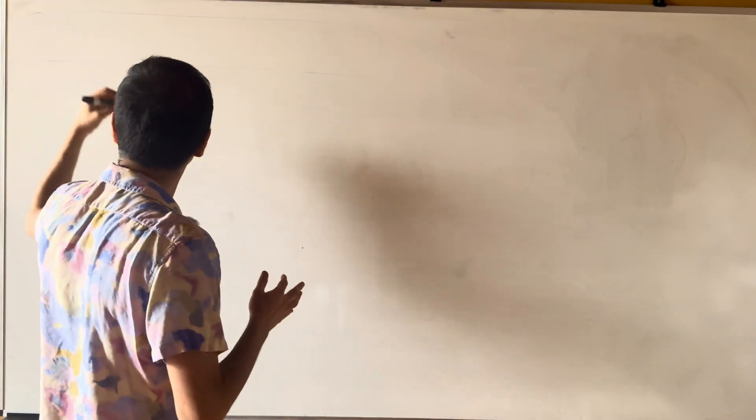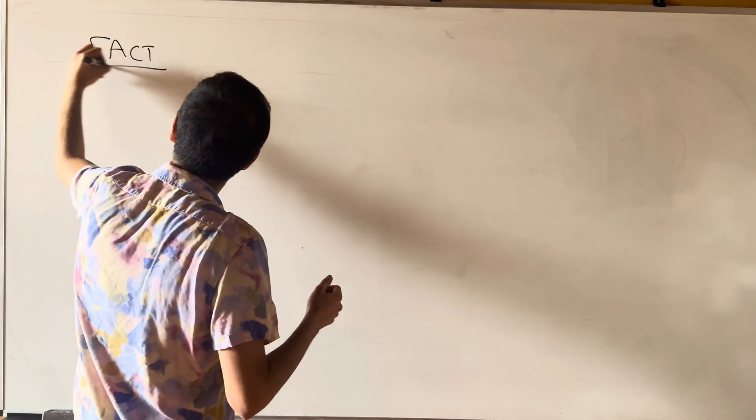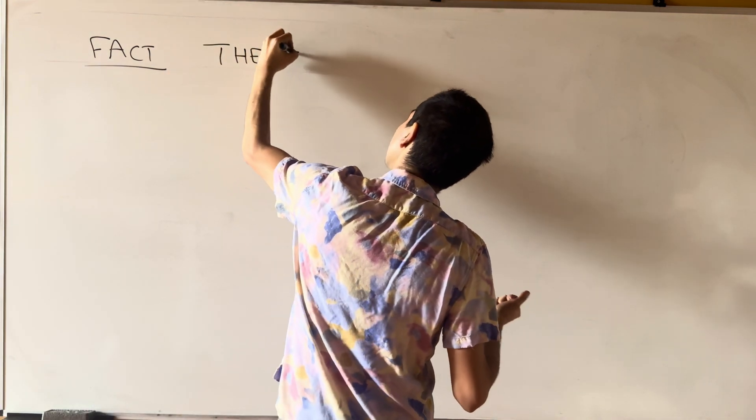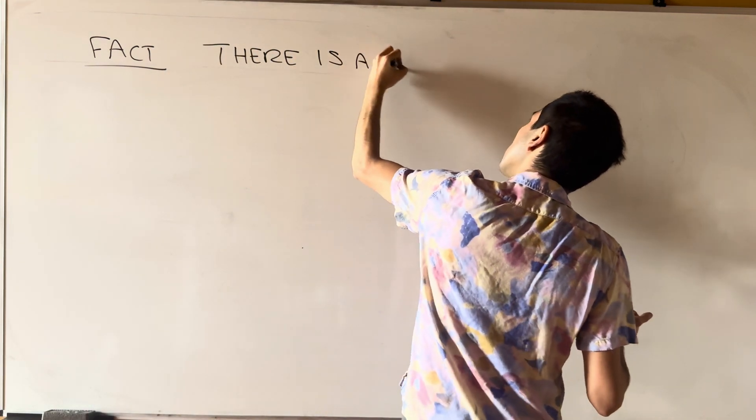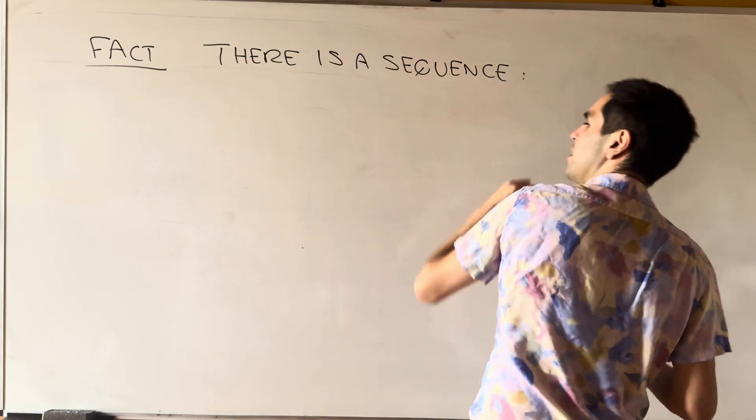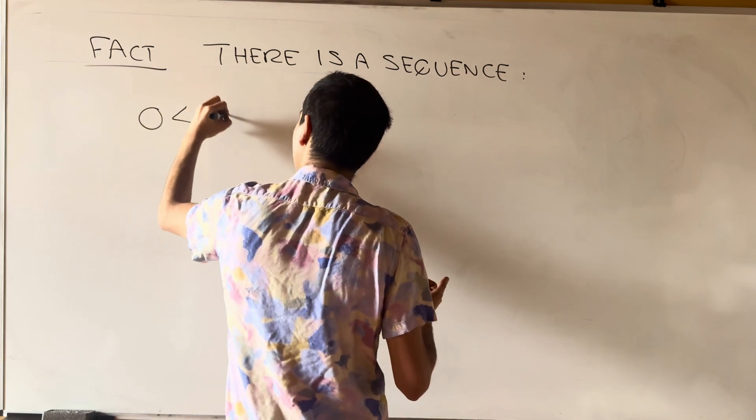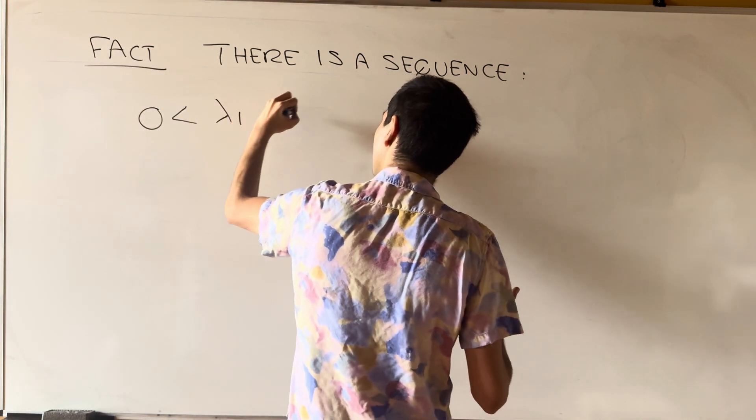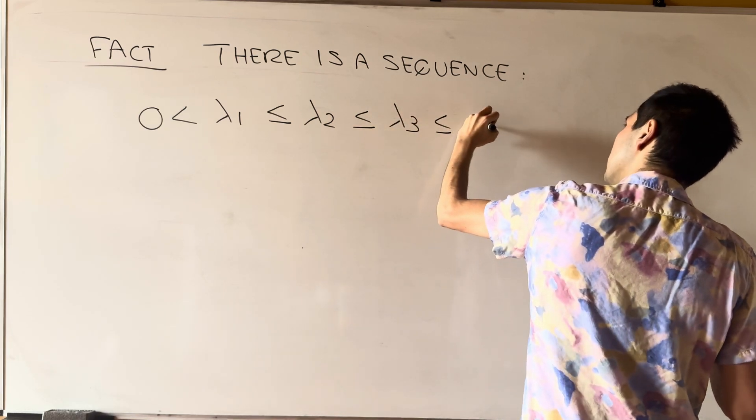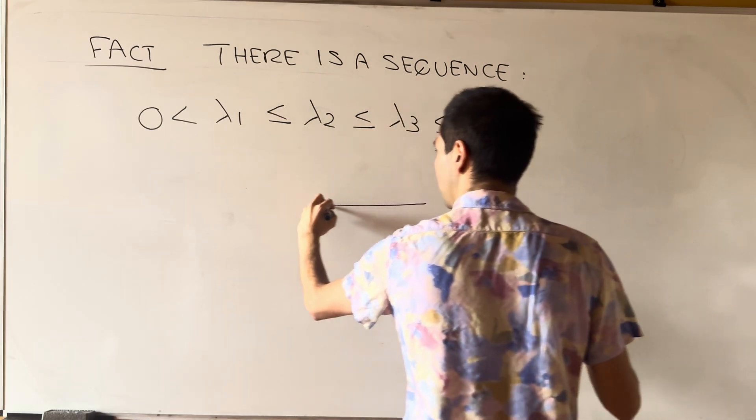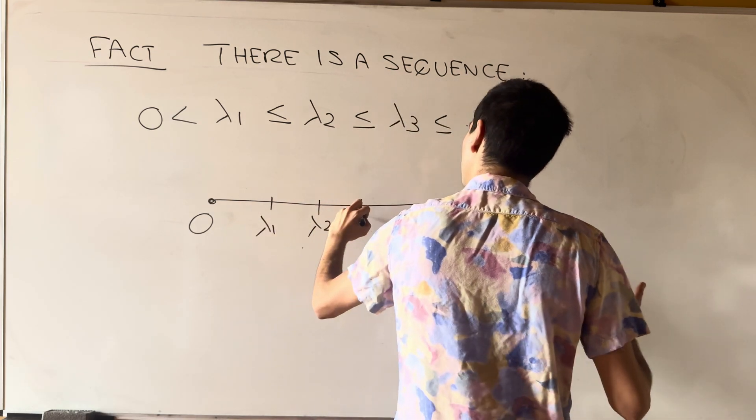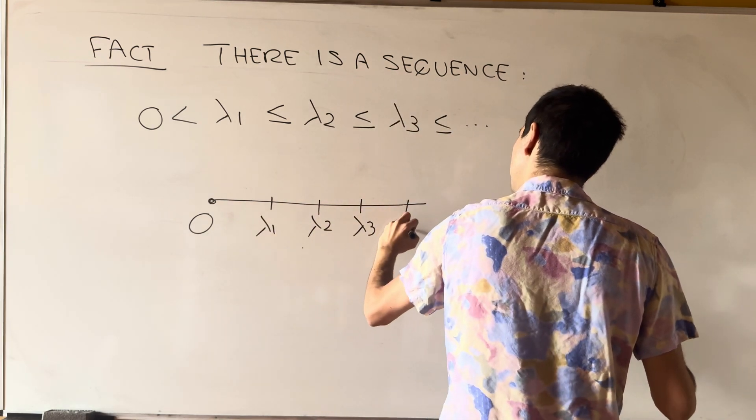So here's a fact that, again, we won't prove, but it's proven in upper-level PDE classes. So there is a sequence as follows. So the first eigenvalue is positive, and then the other eigenvalues are increasing. So kind of like that, this is zero, this is lambda one, lambda two, and again, some of them might be equal.